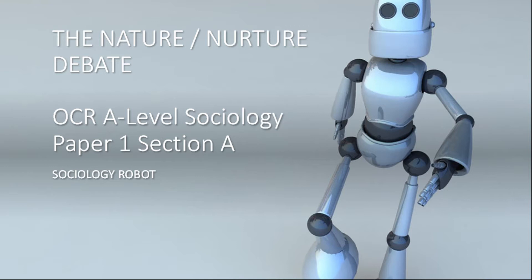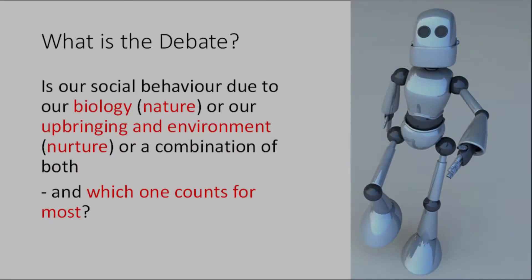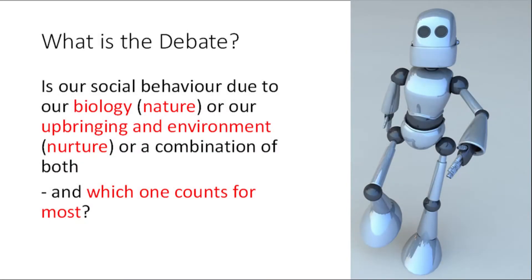Hello and welcome to the 10th video lecture on OCR A-level sociology for paper 1, looking at the nature-nurture debate. What we're asking is whether our social behaviour is mainly due to our biology — that's the nature side — or our upbringing and environment — that's the nurture side — or is it a combination of both? The most crucial part of this debate is the question: which side counts for the most?